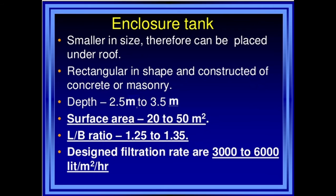The first part is the enclosure tank. The enclosure tank is smaller in size and therefore can be placed under a roof. It is rectangular in shape and constructed of concrete or masonry. The depth of the enclosure tank is about 2.5 to 3.5 meters. The surface area of the tank is about 20 to 50 square meters. The length-to-width ratio for the tank is 1.25 to 1.35.